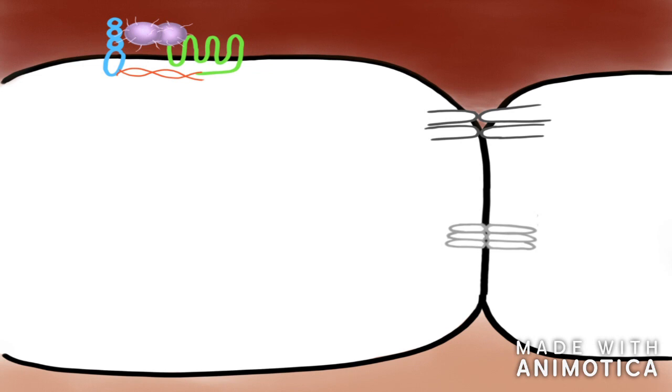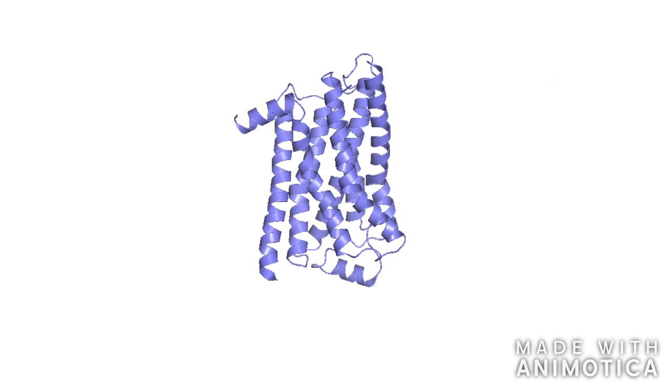Now that the receptors are close together, the bacteria can also bind to the beta-2-adrenergic receptor. Let's look at the structure of the beta-2-adrenergic receptor and the pili in more detail. Here we see the molecular structure of the beta-2-adrenergic receptor with 7 transmembrane helices. The receptor has extracellular domains outside the cell to bind ligands and intracellular domains to bind second messengers inside the cell.